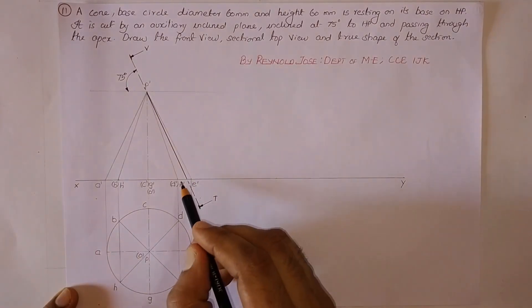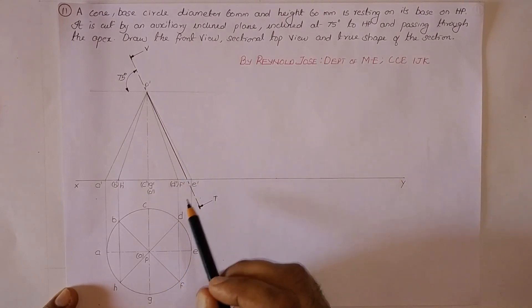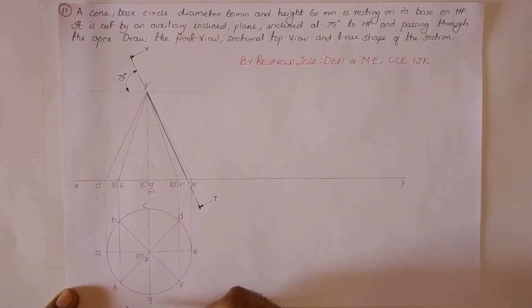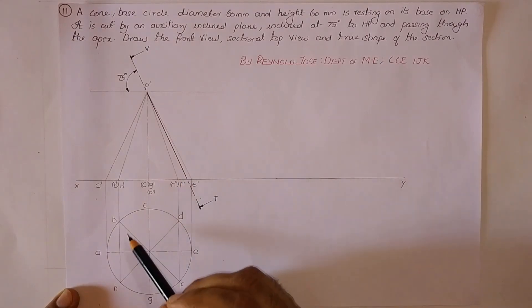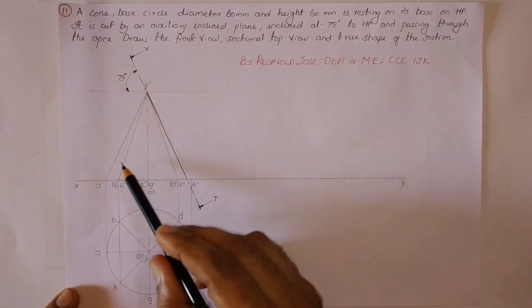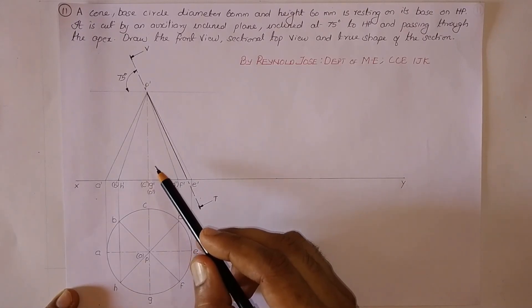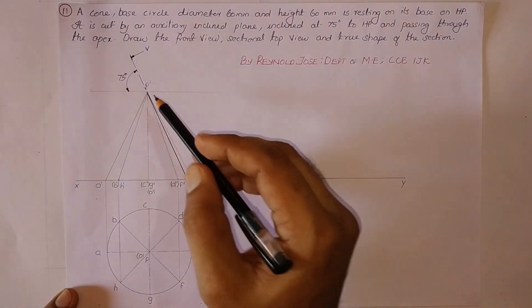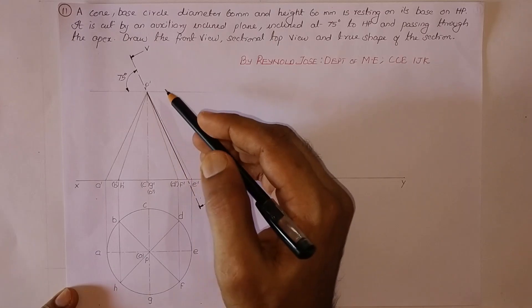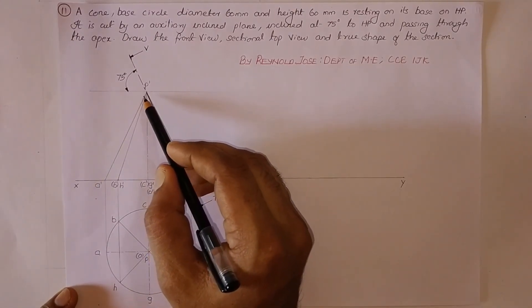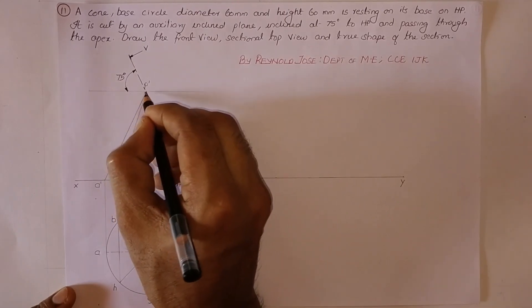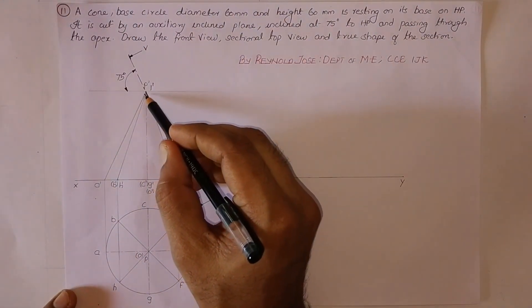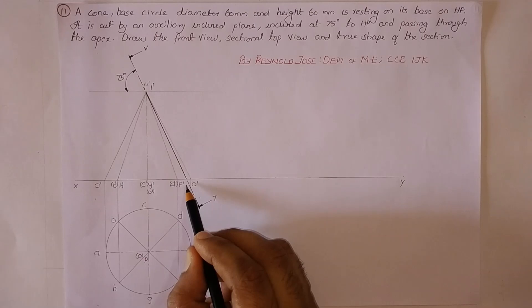The next step is to mark the meeting points of the section plane with the base surface and generators of the cone. Generators PA, PB, PC, PD up to PH — about 8 generators are drawn, but the section plane is not currently meeting these. The section plane is meeting the apex (Fx) at a particular point. That point, previously P-dash, let us now name it 1-dash.